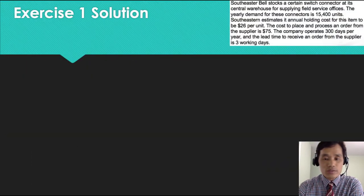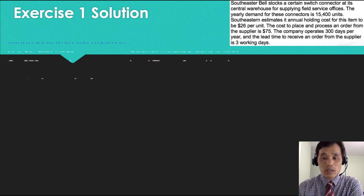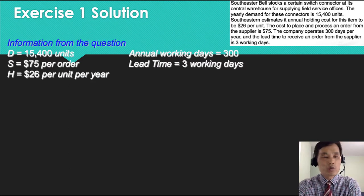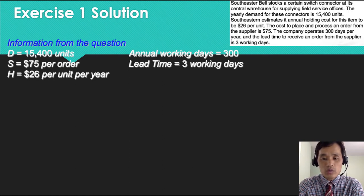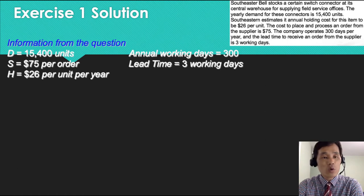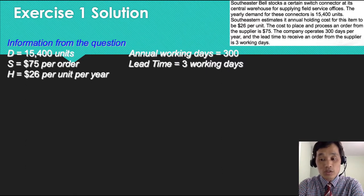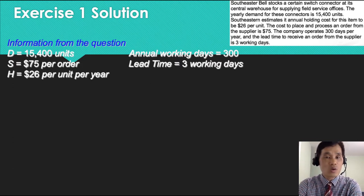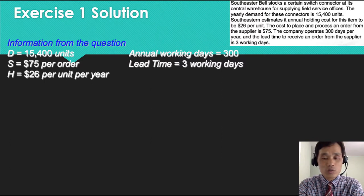Here's the solution. First of all, if you are given this kind of question, you should write down all the information available in the question. Annual demand is 15,400 units. Setup cost per order is $75. Handling cost per unit per year is $26. Annual working days is 300 days, and lead time is 3 working days. These are all given from the question itself.